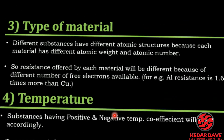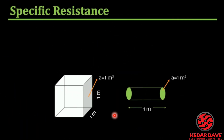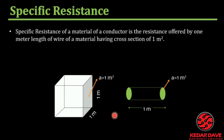Now what exactly is specific resistance? The specific resistance of a material is the resistance offered by one meter length of wire of that material having a cross-section of one meter square.